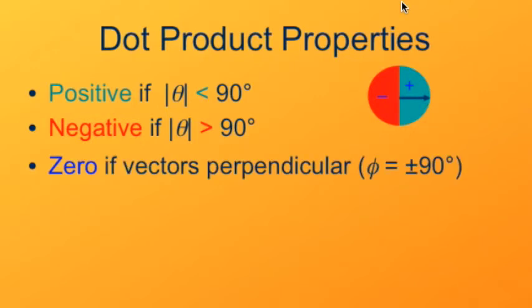If the vectors are perpendicular to each other, there is no overlap between them. Projection of one onto the other gives a length of zero. In that case the dot product is zero.